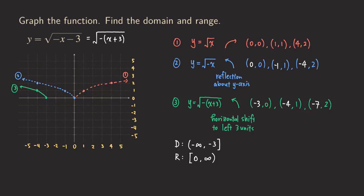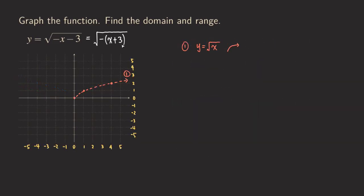Now I'm going to redo this problem in a different way by switching the order of the transformations and see how that works. Let's graph the same function with a different order. The first method applied the horizontal reflection first, then the horizontal shift. Now we are going to do the horizontal shift first.